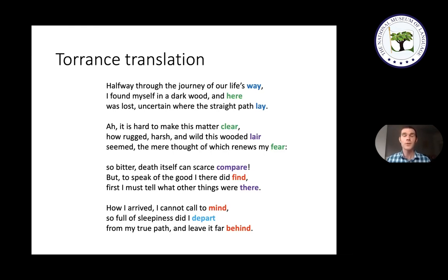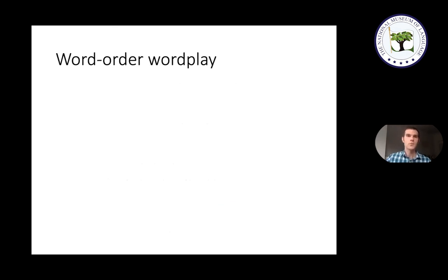In fairness to the translators, translation is a more constrained medium than creating original poetry. When Dante was writing the original Inferno, he had the freedom to structure the narrative in a way that made rhyming easy, whereas translators don't have that freedom. So that's an additional factor making it hard to preserve the rhyme scheme — not just the differences between languages. These observations about rhyming give an example of how some types of wordplay may be easier in other languages than in English, though still possible in English. There are also types of wordplay possible in some other languages but not at all in English — one such type comes from flexible word order.